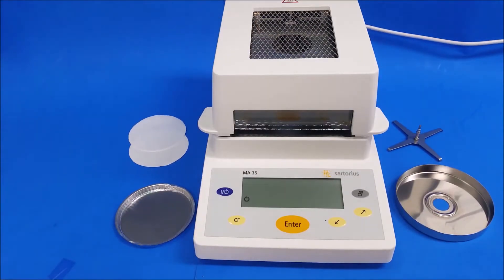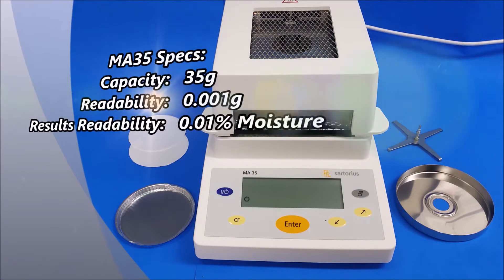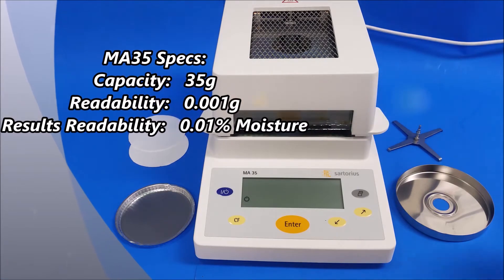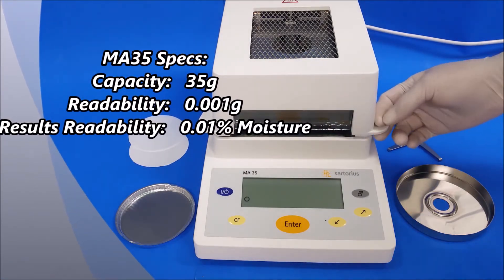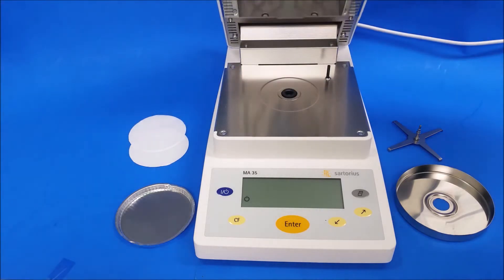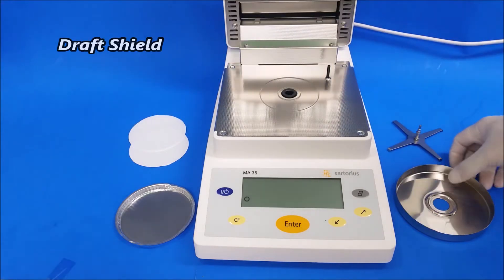Hello everybody, DSC guy here. Today I'm going to show you how to run a test on your Sartorius MA35. First, we're going to put in the original parts. Open up the hood and put in the draft shield first.